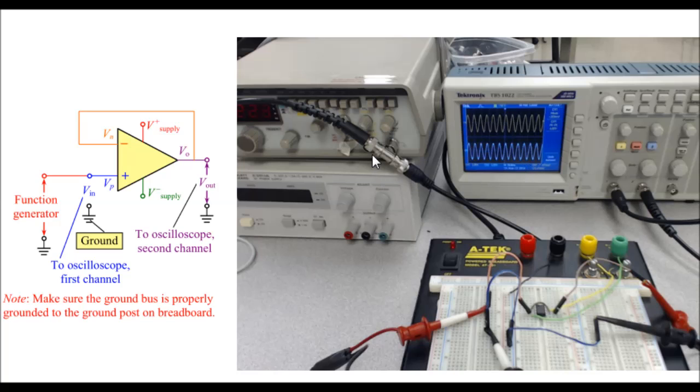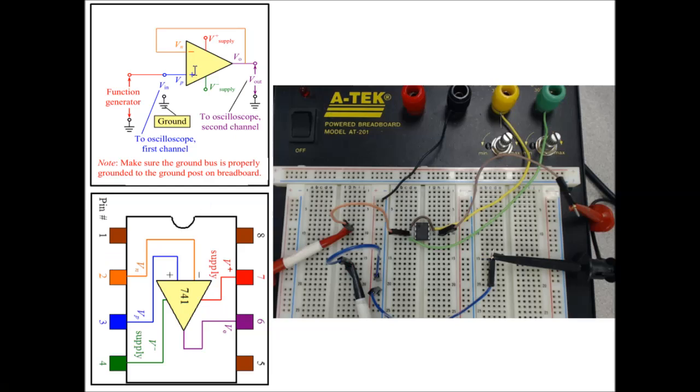So now I'll be able to look at the output from the function generator on channel 1 and I'll be able to look at the output from the op amp on channel 2. The next thing that I did is I connected the positive and negative supplies, and I did all this with the function generator and the breadboard off. Here's my positive supply and I connected that through to, down here I see that the positive supply needs to be pin 7 on the op amp, so I connected that through to pin 7 here. Then I connected the negative input which I can see down here needs to be on pin 4 of the op amp, so I connected that down through this green wire to pin 4.